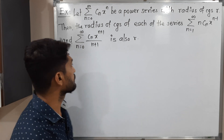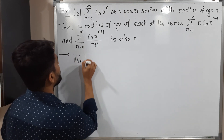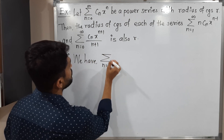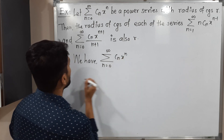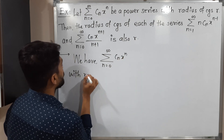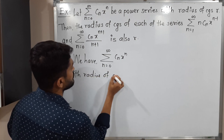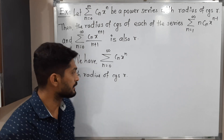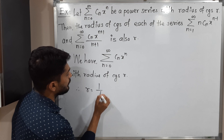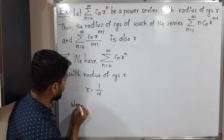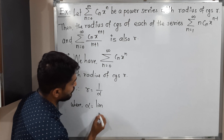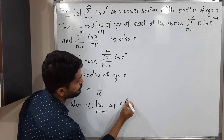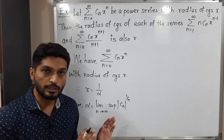Let us start with the given information. We have the power series summation n running from 0 to infinity, Cn x raised to n, with radius of convergence r. We are familiar with the formula of radius of convergence: r is equal to 1 upon alpha, where the value of alpha can be calculated as the limit n tends to infinity of the supremum of mod Cn raised to 1 by n.